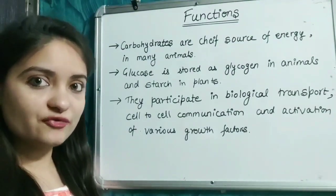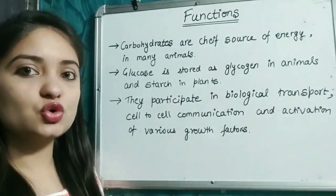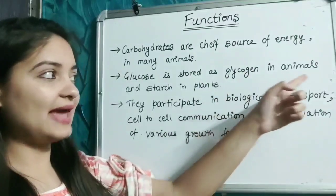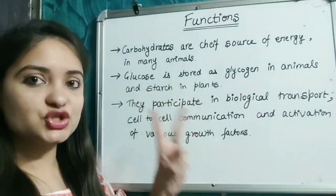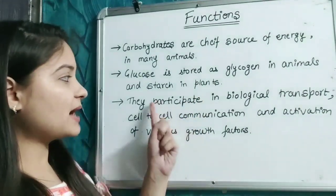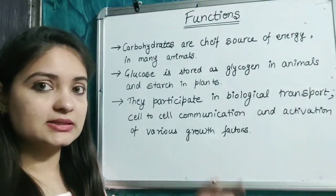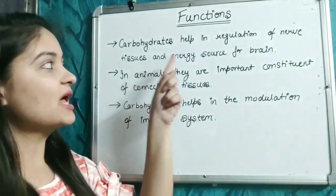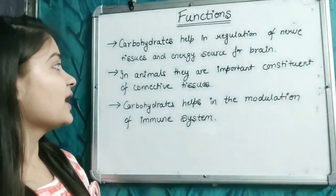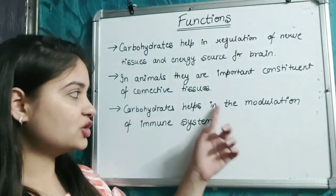Carbohydrates are the chief source of energy in many animals and humans. Glucose is stored as glycogen in animals and as starch in plants. Carbohydrates participate in biological transport, cell-to-cell communication, and activation of various growth factors. They also help in the regulation of nerve tissues, provide energy for the brain, and play a major role in the modulation of the immune system.